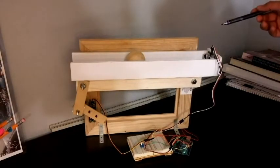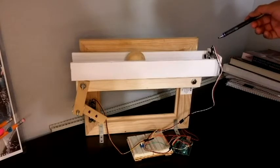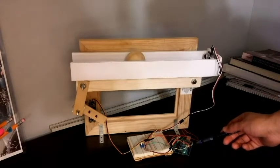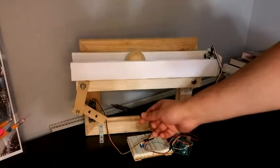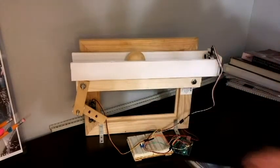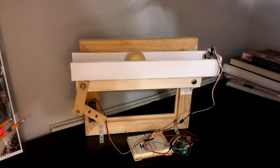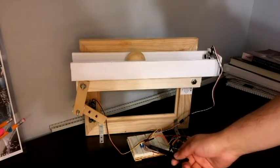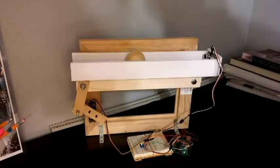Here we have a parallax PNG ultrasonic sensor that provides output feedback into the microcontroller, an HS485HB servo motor that acts as our actuator, a wooden ball that we are trying to balance at a specific point, and a potentiometer that allows us to set where we want the ball to balance.